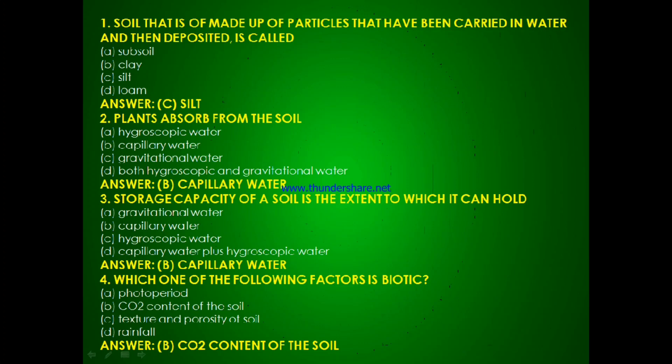Question 1: Soil that is made up of particles that have been carried in water and then deposited is called — soft soil, clay, sleet or loam? The answer is C, sleet. Question 2: Plants absorb from the soil — hygroscopic water, capillary water, gravitational water, or both hygroscopic and gravitational water? The answer is B, capillary water. Question 3: Storage capacity of a soil is the extent to which it can hold — gravitational water, capillary water, hygroscopic water, or capillary plus hygroscopic water? The answer is B, only capillary water.